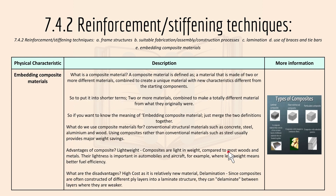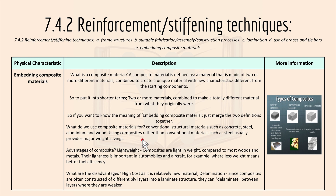Lastly, we have embedding composite materials. A composite material is defined as a material made of two or more different materials combined to create a unique material with new characteristics different from the starting components. In shorter terms: two or more materials combined to make a totally different material. Conventional composite materials can include concrete, steel, aluminium, and wood. Using composites rather than conventional materials such as steel usually provides a major weight saving.